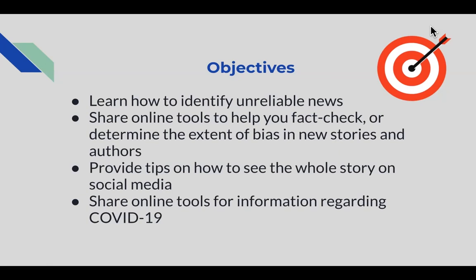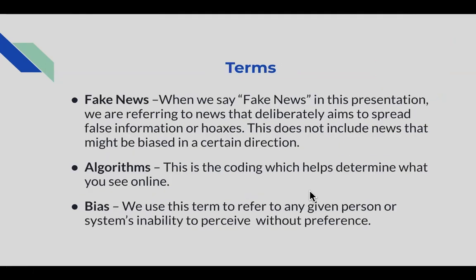In terms of a few vocabulary words, starting with fake news: this refers to news that deliberately aims to spread false information or hoaxes to people consuming the media. This does not include news that might be biased — it is specific information that has been made up. Next is algorithms, which is the coding that helps determine what you see online, such as content in your Instagram feed or search results. Bias refers to any given person or system's inability to perceive without preference.